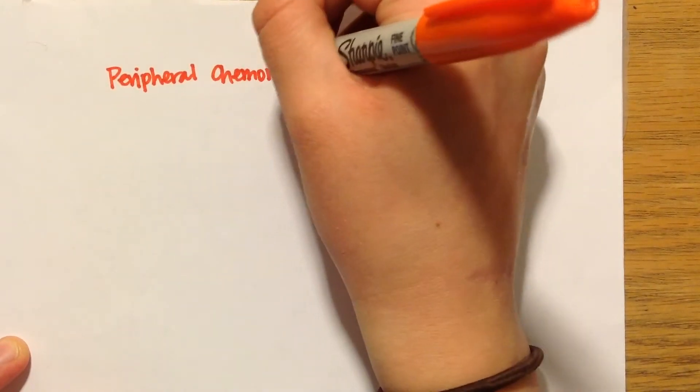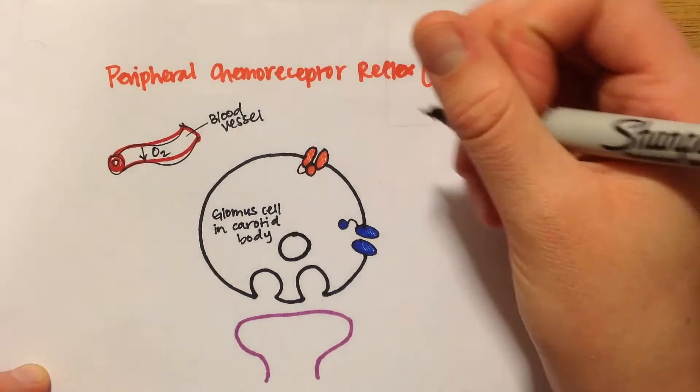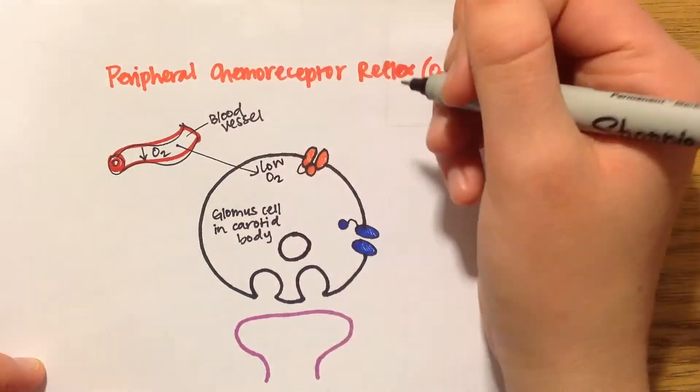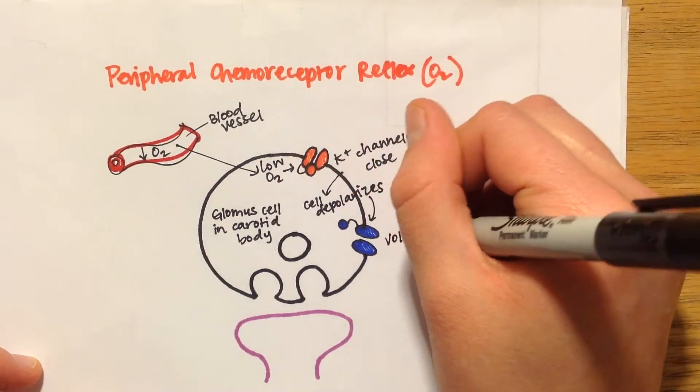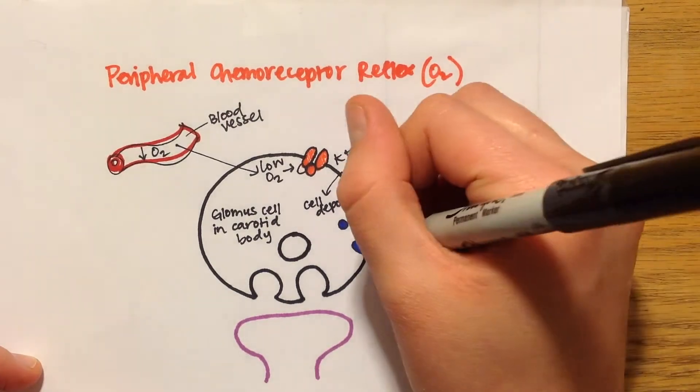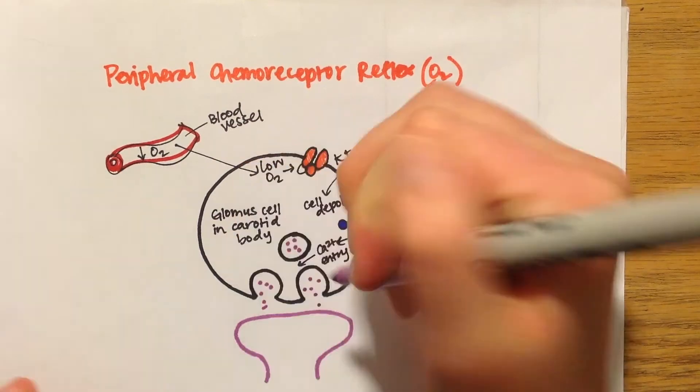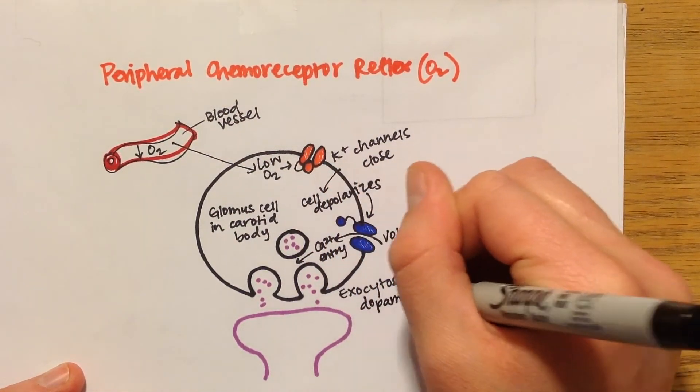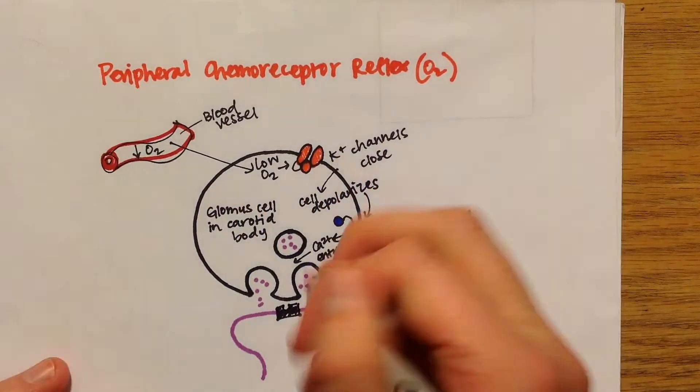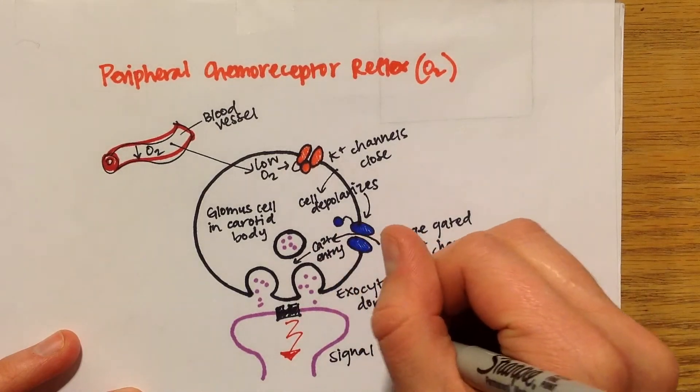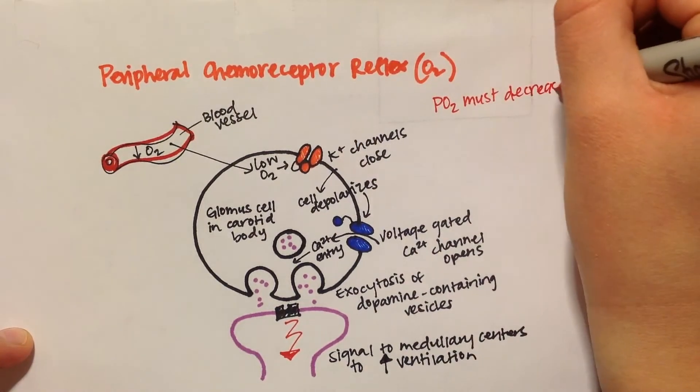The peripheral chemoreceptor reflex for low oxygen levels is less common and acts in the glomus cells in the carotid and aortic bodies. The low O2 closes potassium channels to depolarize the cell and open voltage-gated calcium channels. Calcium causes the exocytosis of dopamine to trigger an action potential signal to increase ventilation. However, in order for there to be any significant activation of this reflex in the body, the partial pressure of oxygen must decrease below about 60 mmHg. So like I said, it's not very common.